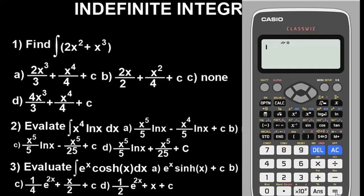What clearing does is put your calculator in default mode — very important. Now, for solving integration with the Casio calculator, you have to store a value. I recommend always storing x = 2. I have worked with 2 for a very long time and have not found any error with it.